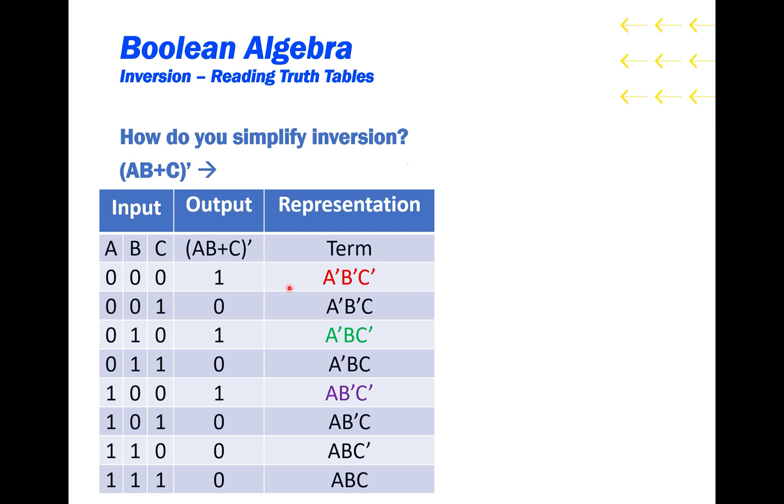In order to construct a full function for the truth table, we can simply combine all of the terms representing the rows that output 1 with ORs.